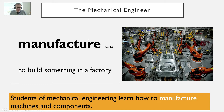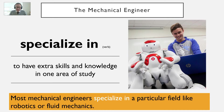Manufacture. This has a difficult spelling at the end. It means to build something in a factory. Here we can see a car being made or manufactured. For example, students of mechanical engineering learn how to manufacture machines and components.